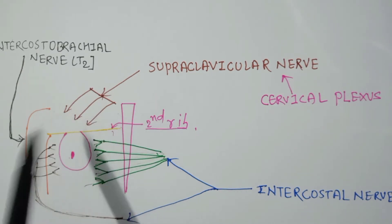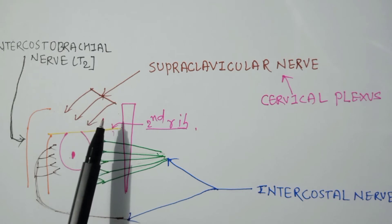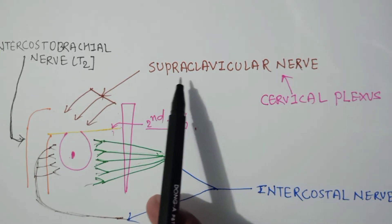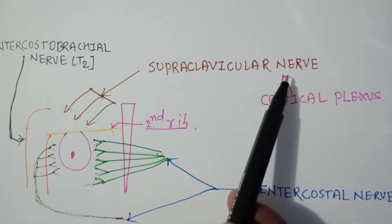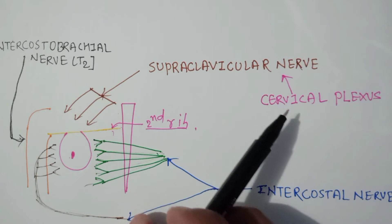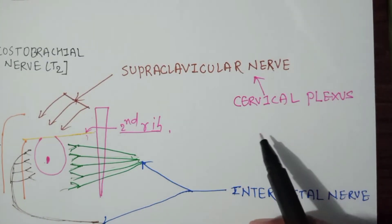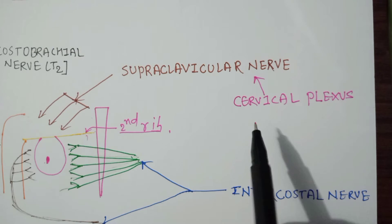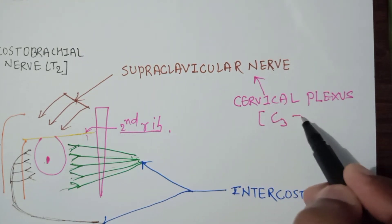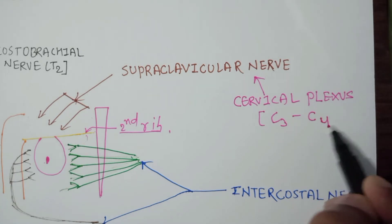For the upper pectoralis region, the nerves are supplied by the supraclavicular nerve. This supraclavicular nerve is a branch of the cervical plexus and it derives from C3 and C4.